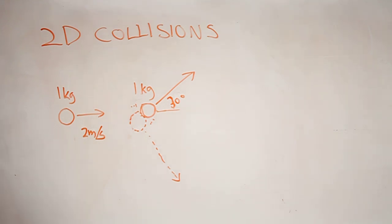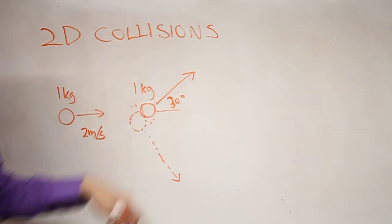The most common real-life example of two-dimensional collisions is in billiards, when you're hitting the white ball to hit another ball and you're trying to sink it into a pocket.